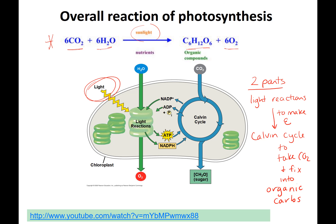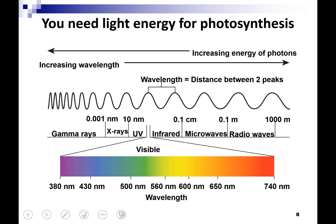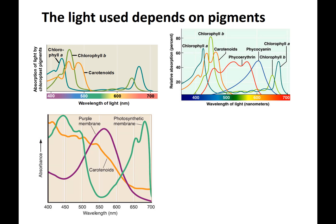A key component we haven't discussed is light energy — you have to have light. Plants use visible light. The light spectrum goes from gamma rays, which are very high energy, to radio waves, much lower energy. Gamma rays, X-rays, and UV rays can do harm. Visible light is what we see, and different plants use different wavelengths or colors from the visible light spectrum. Absorption spectra show plants absorbing light from different wavelengths, and it all depends on their pigments.